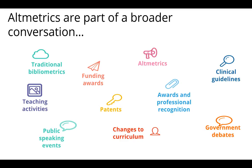Altmetrics are part of a broader conversation. They're there to aid traditional bibliometrics such as funding awards, clinical guidelines, awards and professional recognition, government debates, curriculum changes, patents, and public speaking events. The horse bolted a while ago in terms of trying to capture this data, but things are now happening to make the most of new research. These are the sort of things we should have been doing probably 10 to 15 years ago — we didn't really have a plan when we started putting our research onto the web, and we never thought about wanting to look at article level metrics as opposed to journal level.